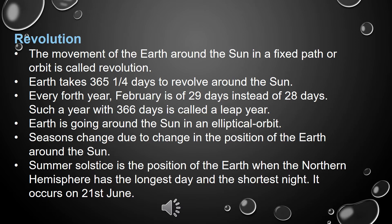Seasons change due to the change in the position of the earth around the sun. Summer solstice is the position of the earth when the northern hemisphere has the longest day and the shortest night. It occurs on 21st June.